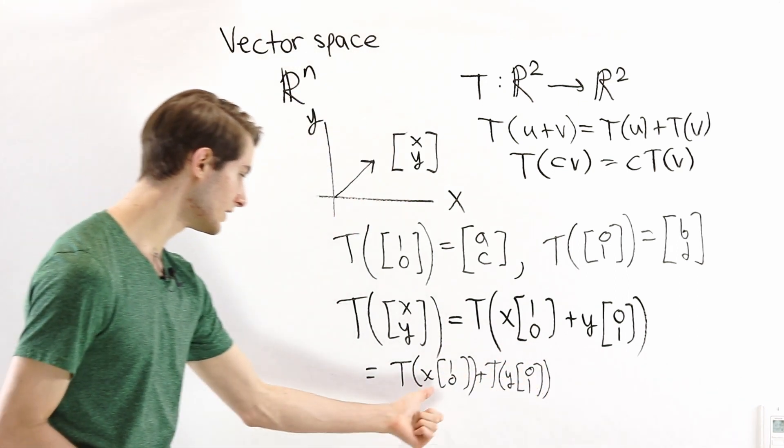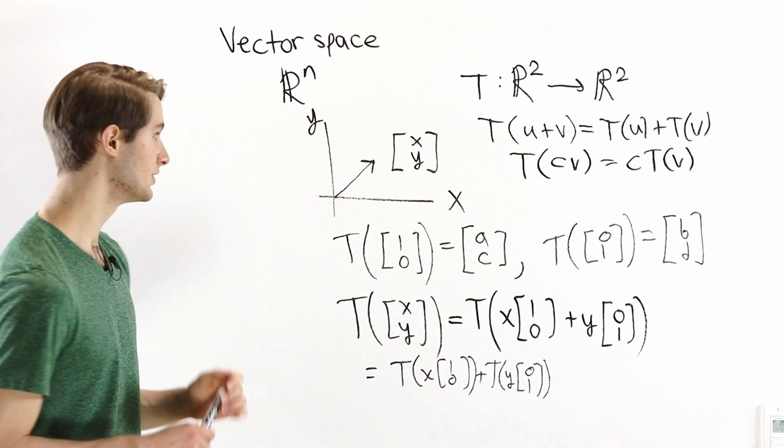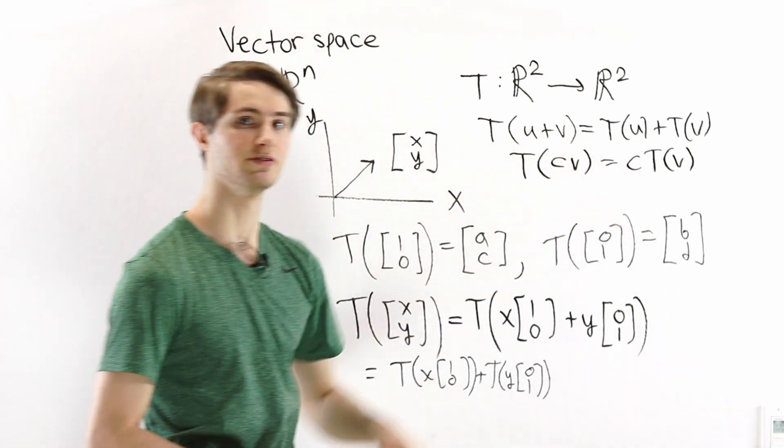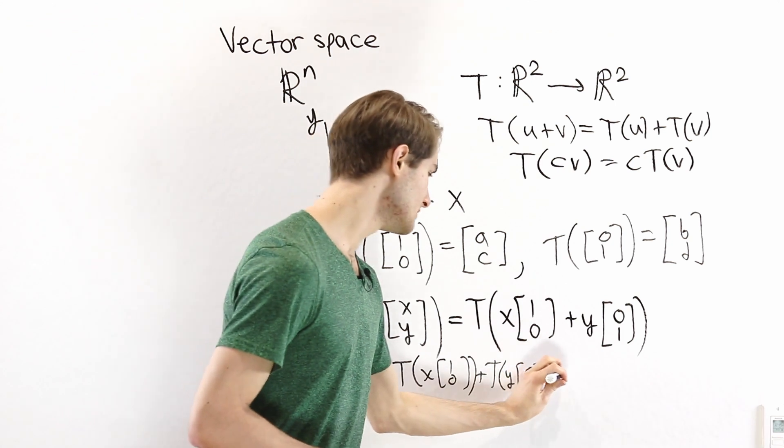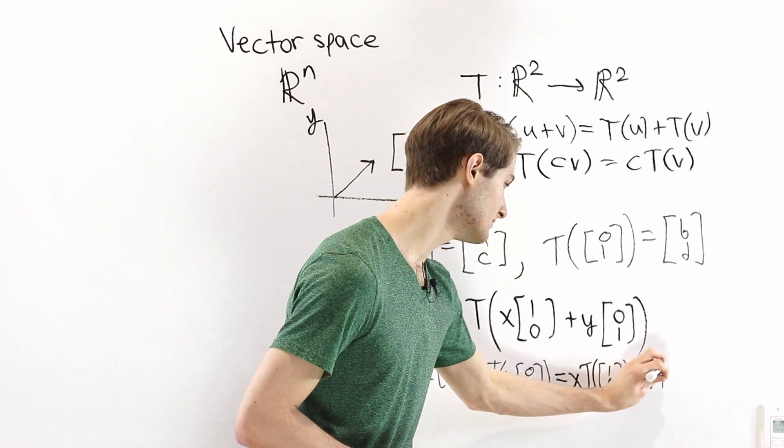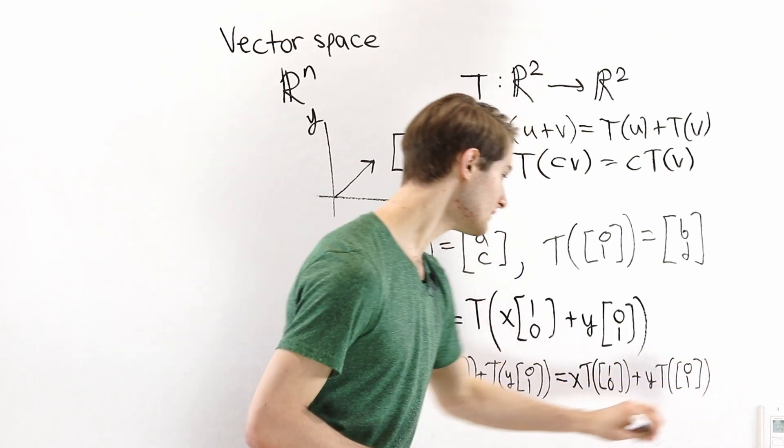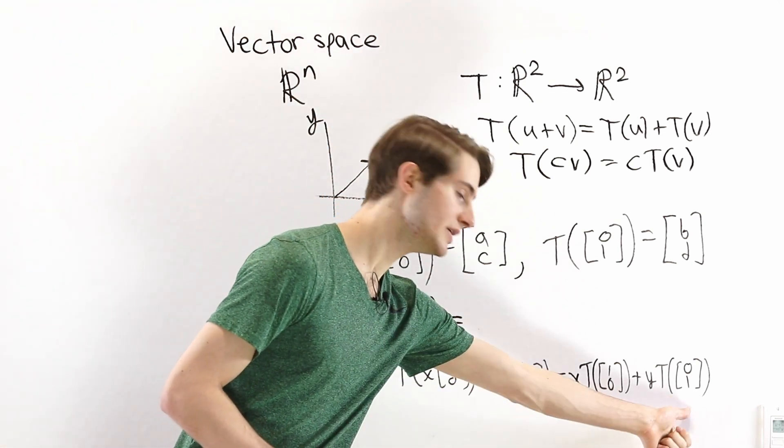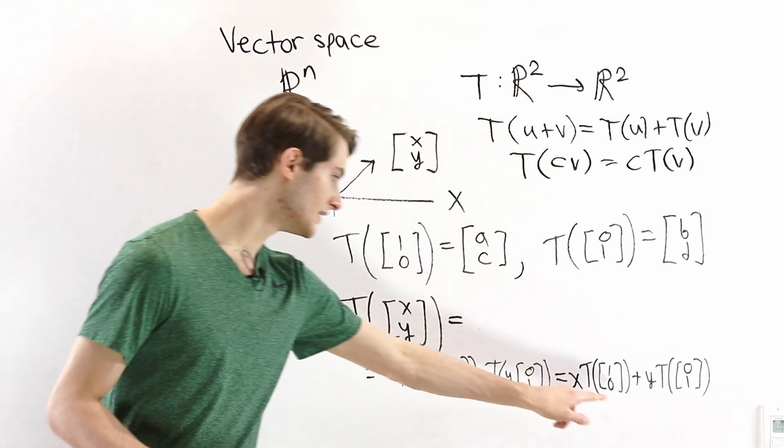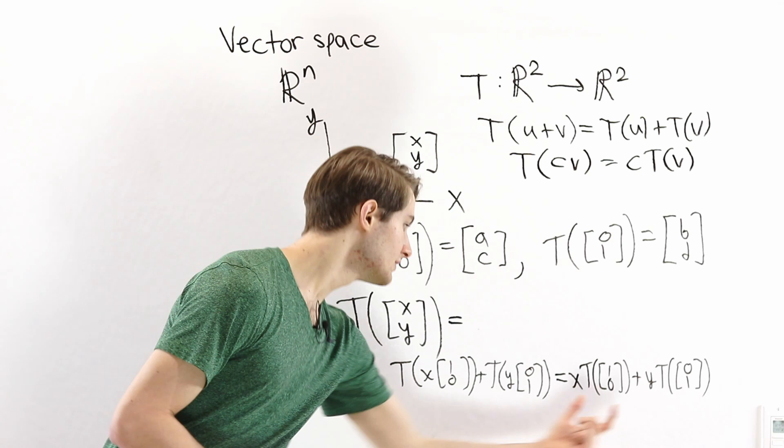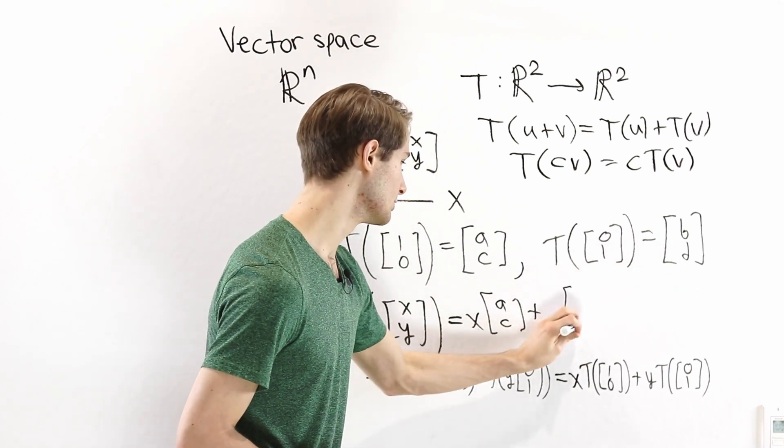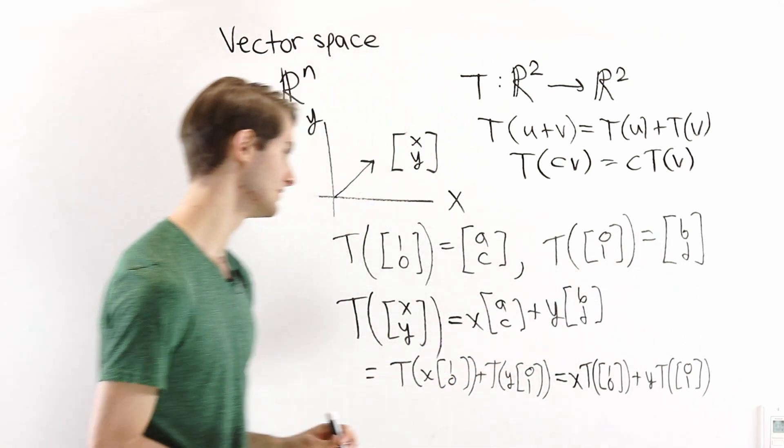What do we do from here? Well, this is a constant times a vector, and the second condition for a linear transformation is T of c times v. We can pull out the c and just do T of v on the inside. So this is going to be equal to x times T of 1, 0 plus y times T of 0, 1. And now we can actually evaluate these 2 things, because these are the 2 pieces of information that I gave at the beginning. T of 1, 0 is equal to a, c, so this is equal to x times a, c. And then this second part, T of 0, 1 is equal to b, d, so we get y times b, d.